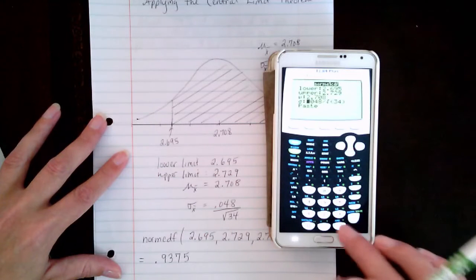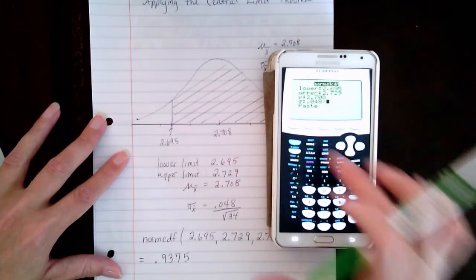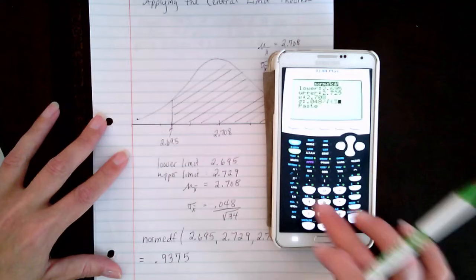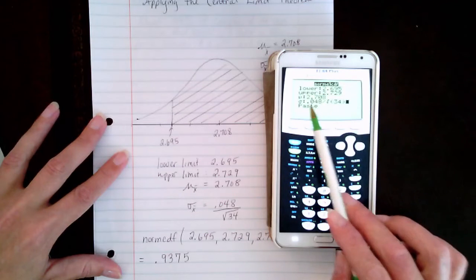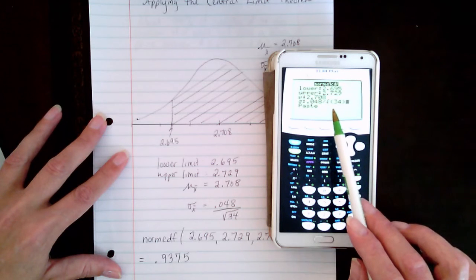And the standard deviation is 0.048 divided by the square root of 34. Now notice you can do this division right here within the function, and I would suggest that you do that to avoid rounding error.